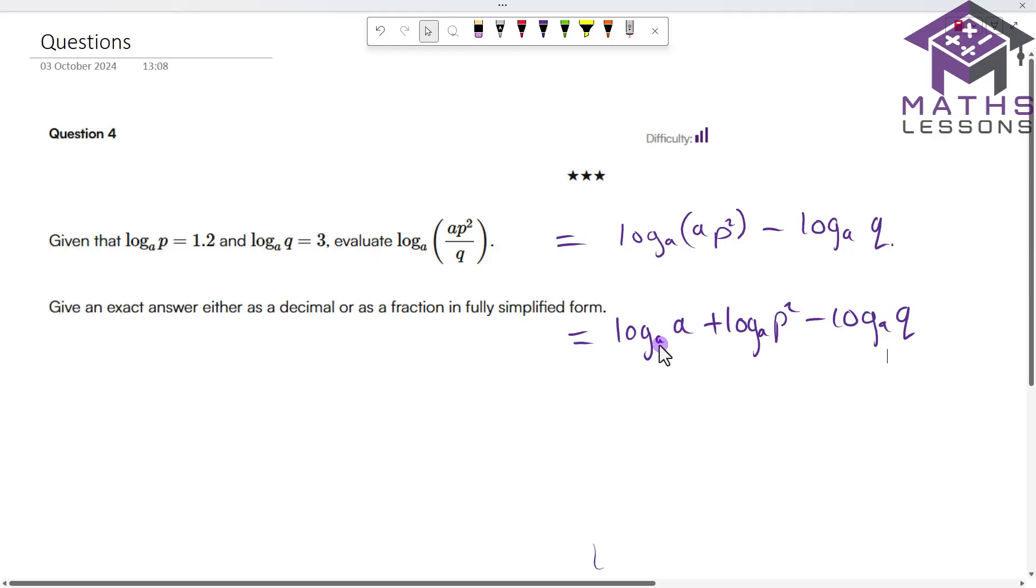Now log a of a, what power do I have to raise a to to get a? Oh, that's just one. And then I've got log a of p squared. I'm going to use the power law to bring that two down in front. So I get two log a of p.